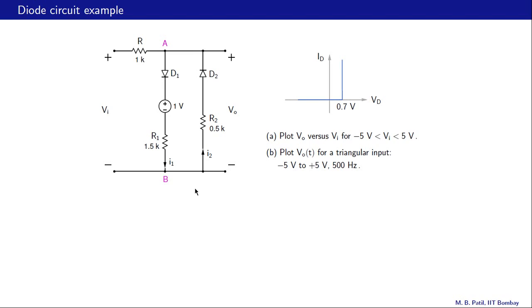Welcome back to basic electronics. We looked at a simple diode circuit in the last class. We will now look at a similar problem but with two diodes. We will first obtain the Vo versus Vi relationship for that circuit, and then use it to plot the output voltage as a function of time for a triangular input voltage waveform going from minus five volts to plus five volts with a frequency of five hundred hertz.